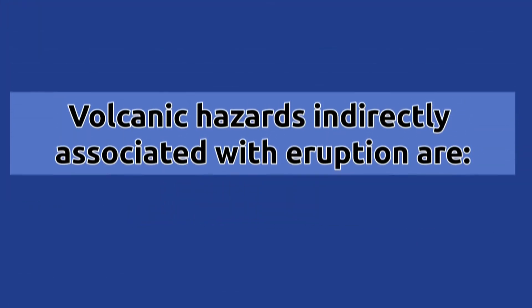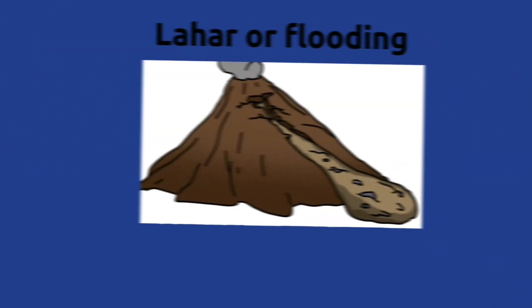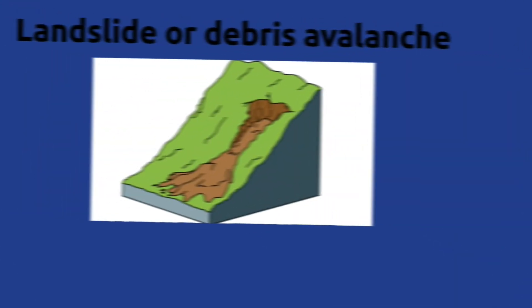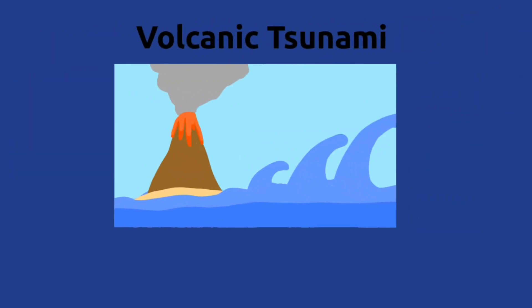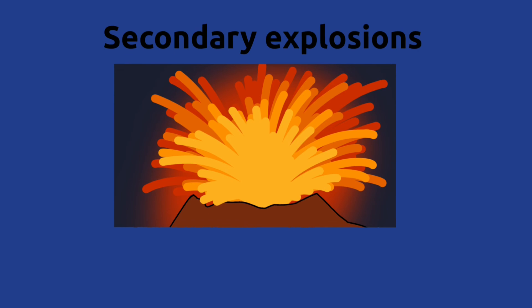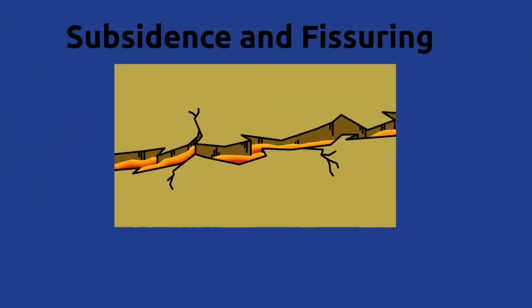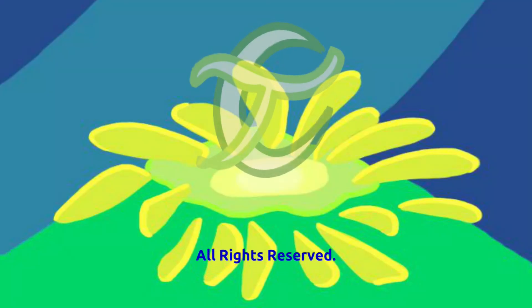Volcanic hazards indirectly associated with an eruption are: lahar or flooding, landslide or debris avalanche, volcanic tsunami, secondary explosions, and subsidence and fissuring.